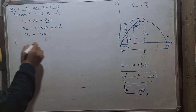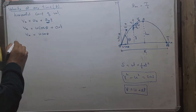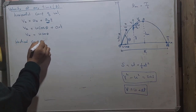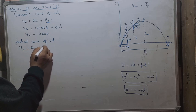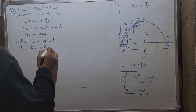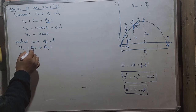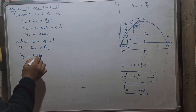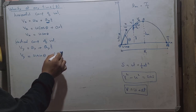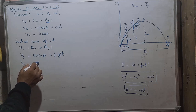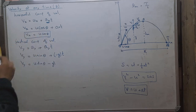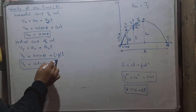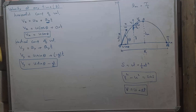For the vertical component of velocity, vy = uy + ay × t. Here uy = u sinθ and ay = −g. So vy = u sinθ − g×t. This is the vertical component of velocity at point P.